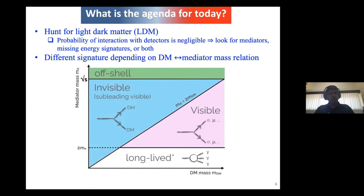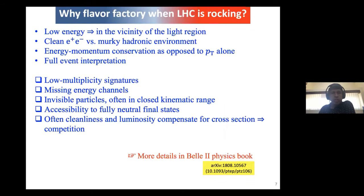Now let's come to the agenda of the day: we want to hunt for light dark matter. These particles have a very low probability of interaction, right? The kind of signature we're looking for: we're looking for mediators, missing energy signatures, or both. Depending on the dark matter and mediator mass relation, as you see in this two-dimensional plane, you have different signatures. Some of the results I'll present will have a sample from each of these signatures.